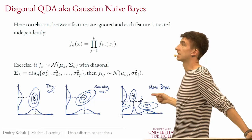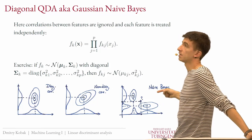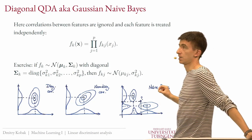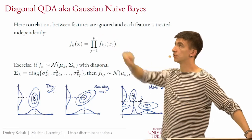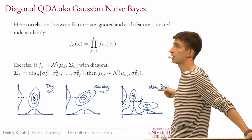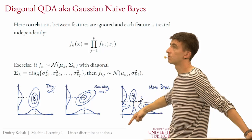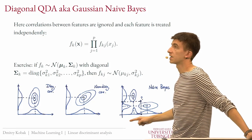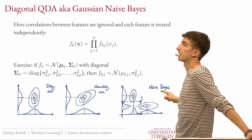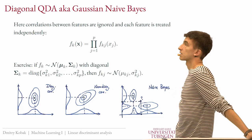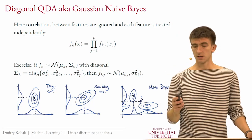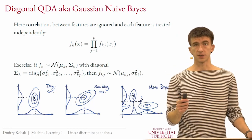It's called naive because it ignores all correlations in the data by assuming diagonal covariance matrices. Note that the decision boundary here is still quadratic — this is still QDA — so it will be some curved line in two dimensions.